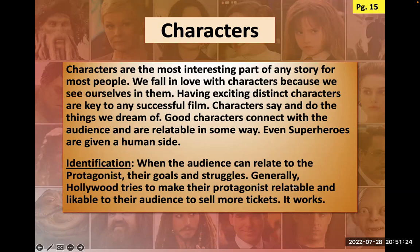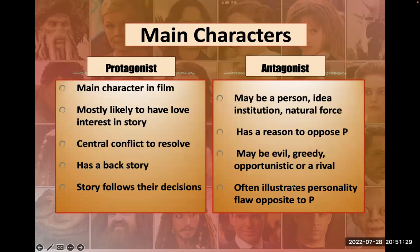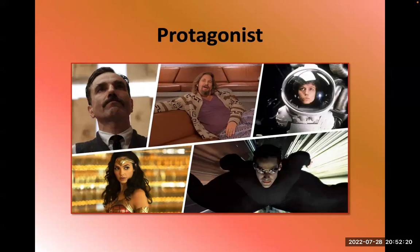Protagonists and antagonists are the main characters in film. The central character is the protagonist — they're most likely to have a love interest, they have the central conflict to resolve, they have a backstory, and the story follows their decisions. The antagonist could be a person, an idea, an institution, or even a natural force. They have a reason to oppose the protagonist — they could be evil, greedy, or just someone who wants the same job. They often illustrate a personality flaw of the protagonist.